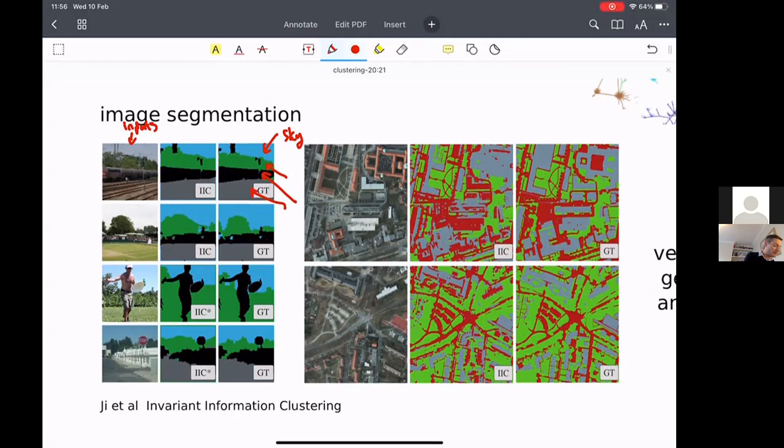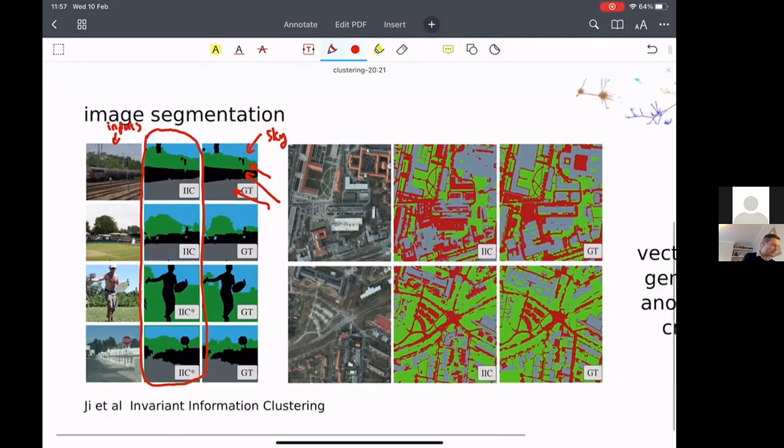So in this column here, the Oxford computer vision group has used a clustering algorithm that automatically takes in images and segments each pixel into one of four different clusters. And the clusters were identified not from human labels, but from just the statistics of images. And you can see it does a good job.